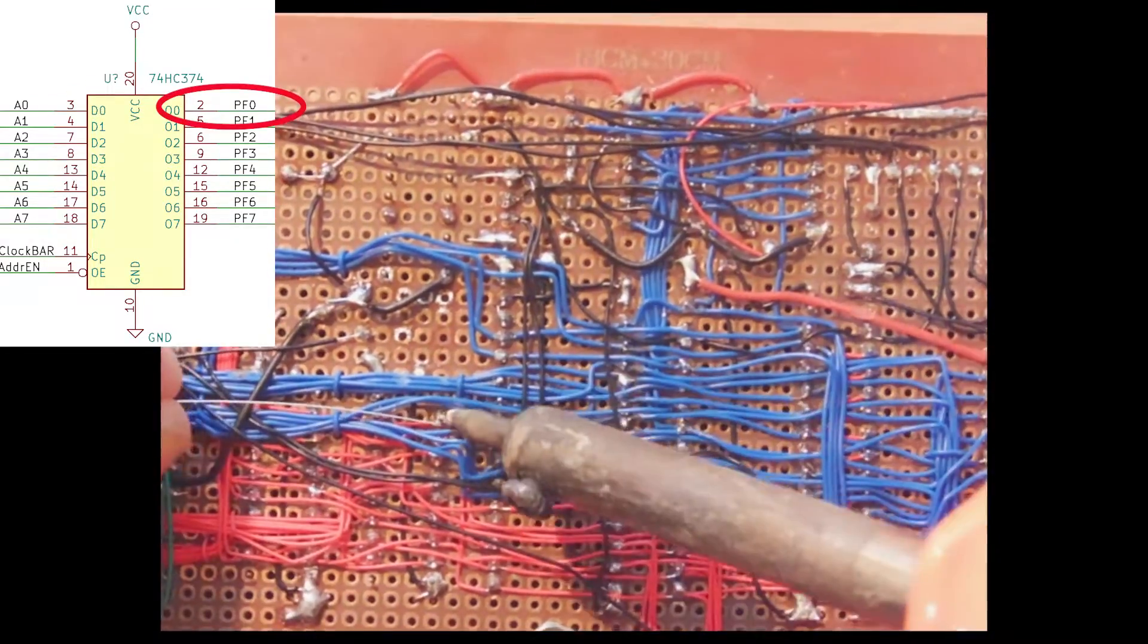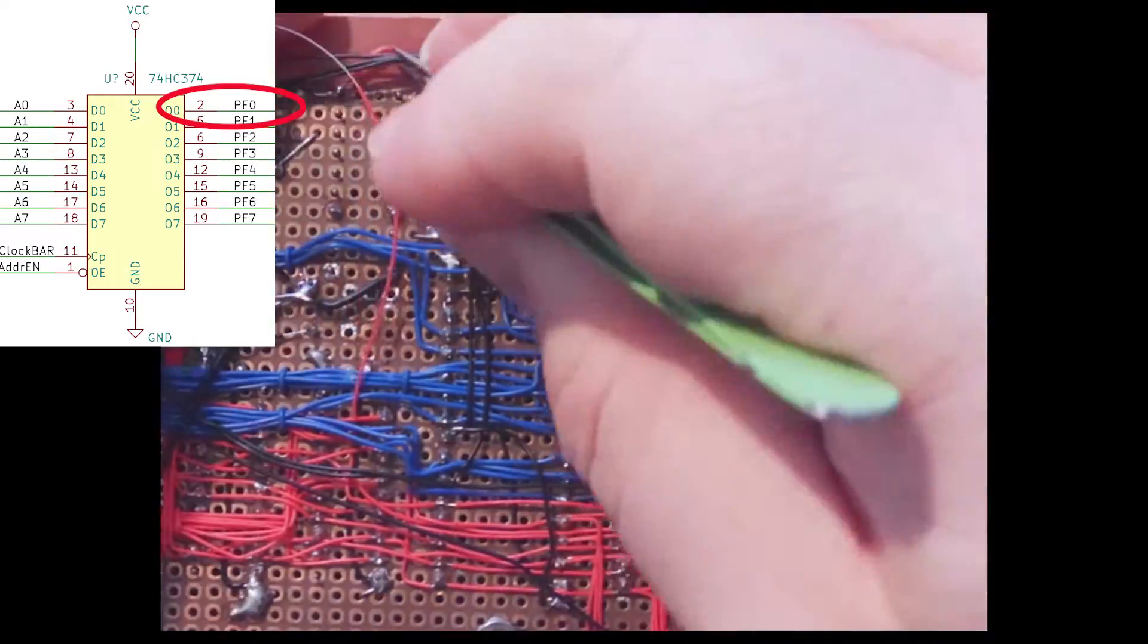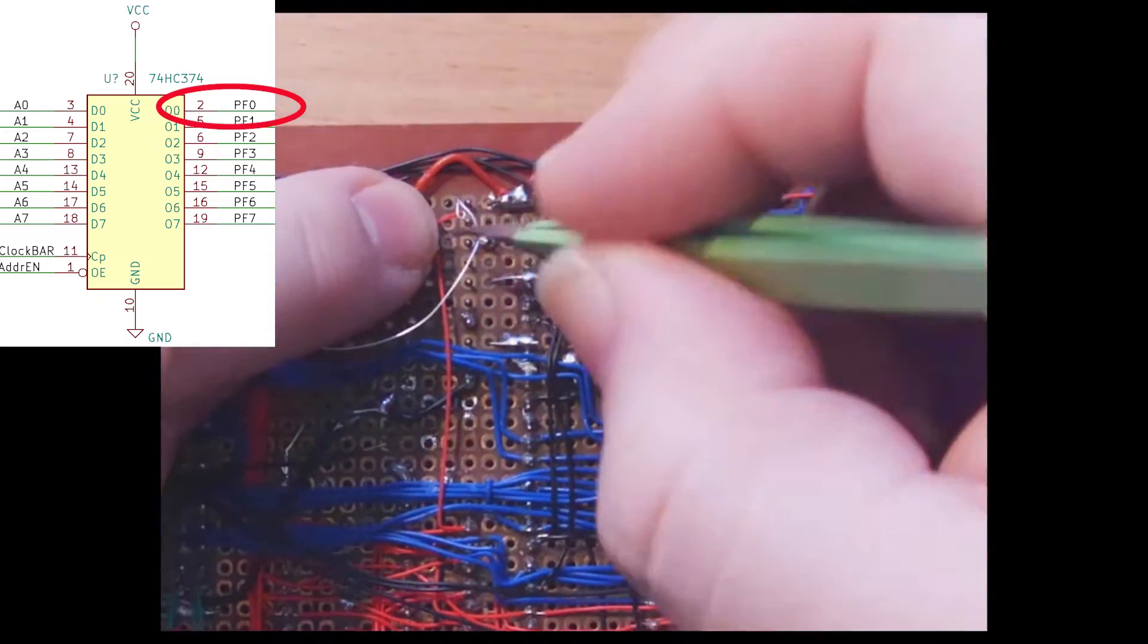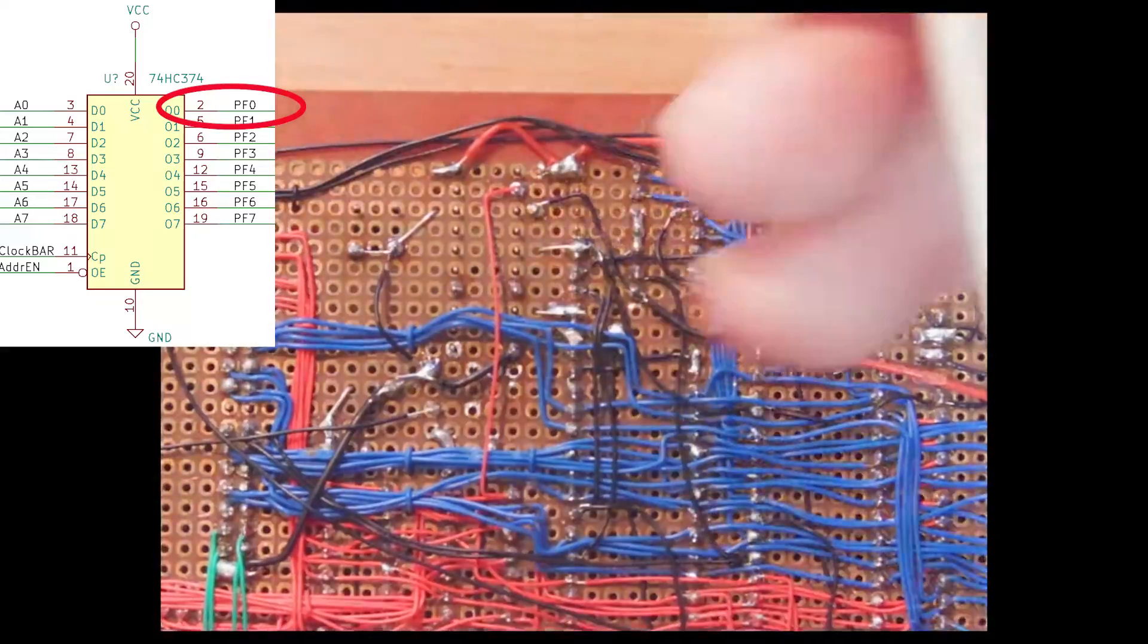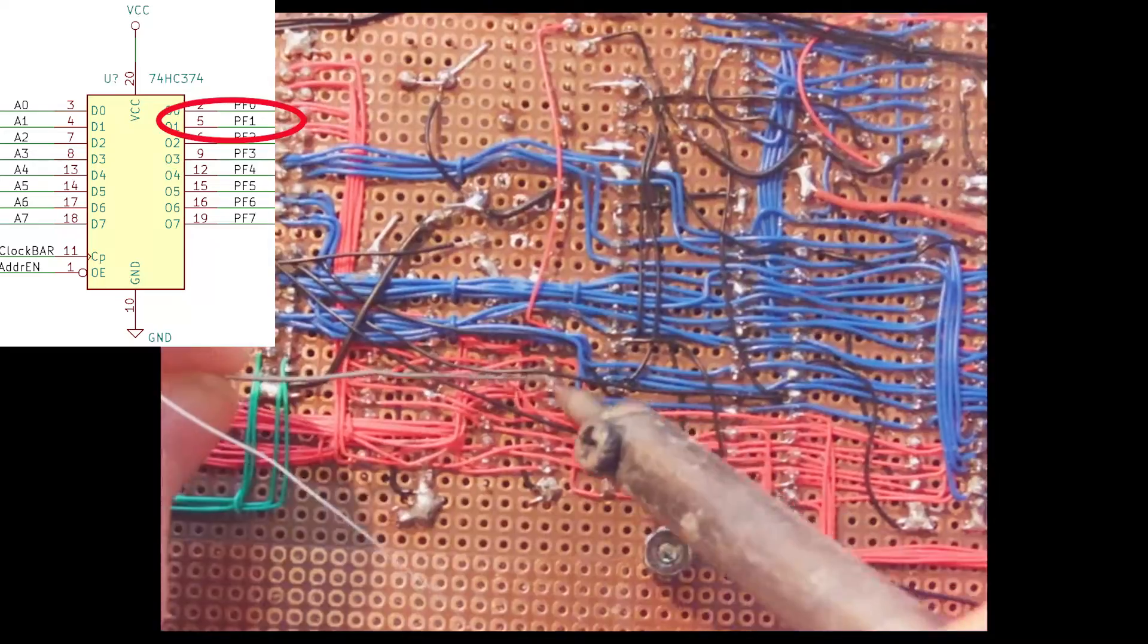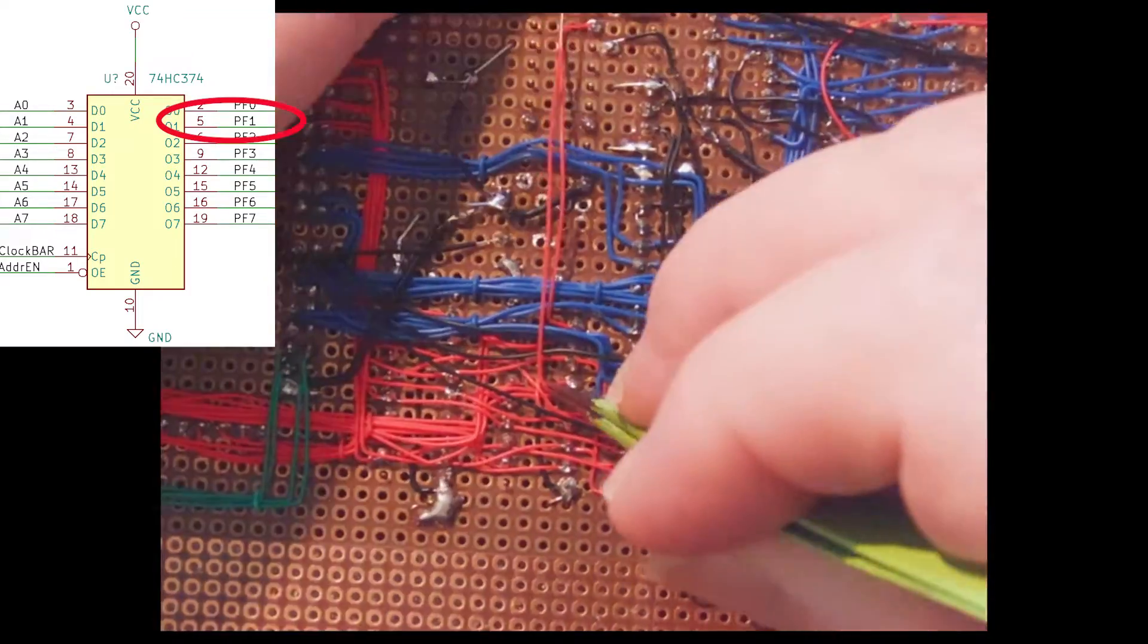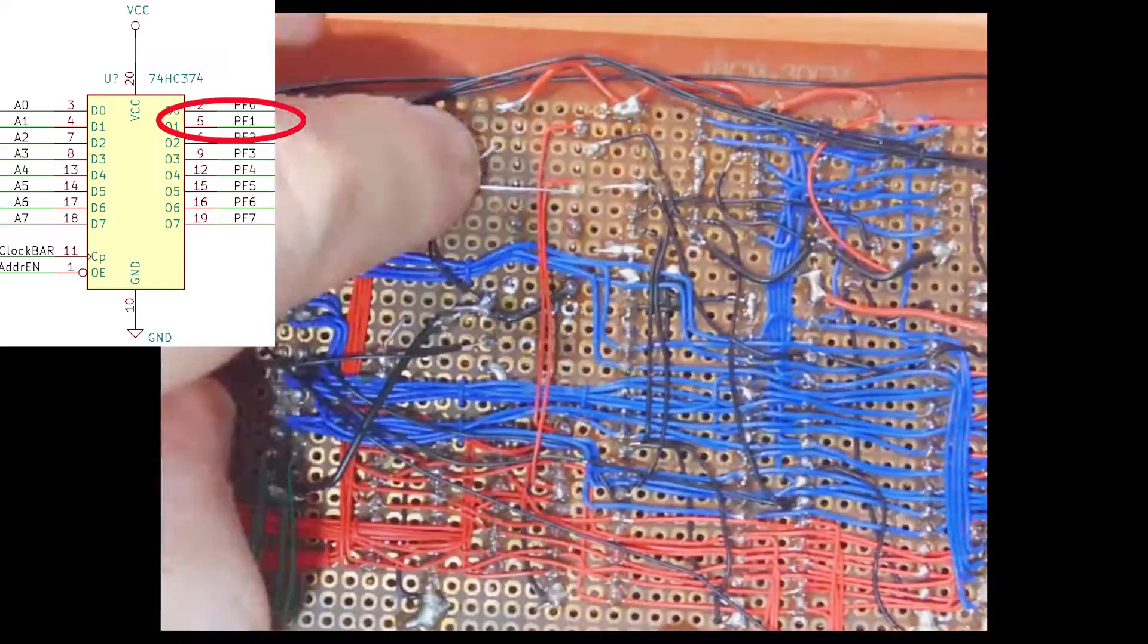I want to connect all the output wires from the upper 74HC374 to all the output wires of the lower 74HC374 which are already connected up to the Arduino Mega. So I need to connect pin 2 to pin 2, pin 5 to pin 5, and all the way around the chips for the outputs of the 374.